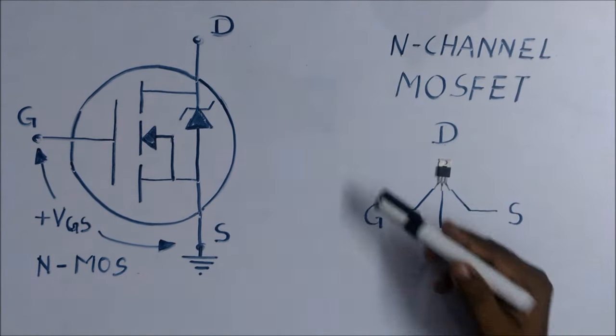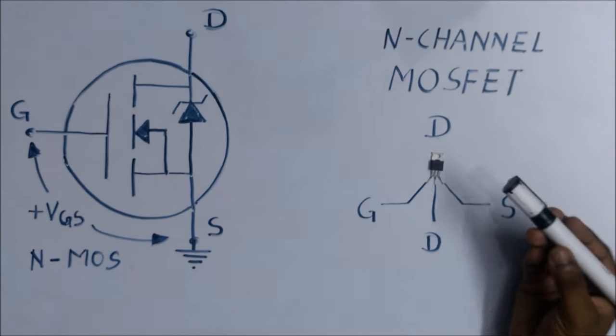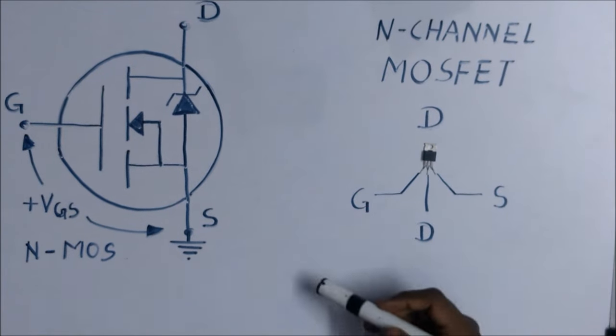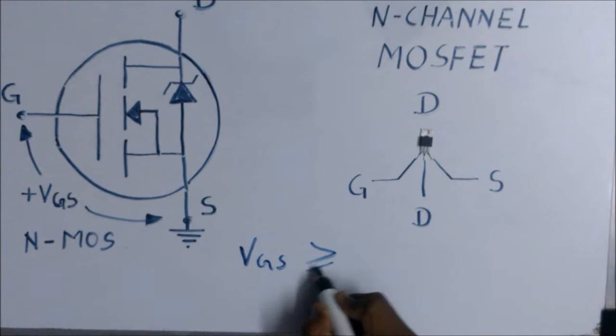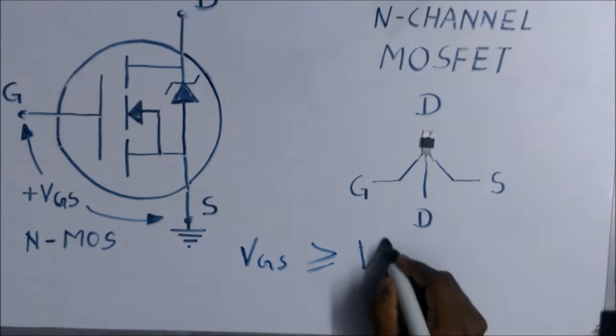How to check if MOSFET is in working condition or not? As I have N channel MOSFET, I have to apply positive gate voltage which must be greater than threshold voltage, which is approximately 0.45V.